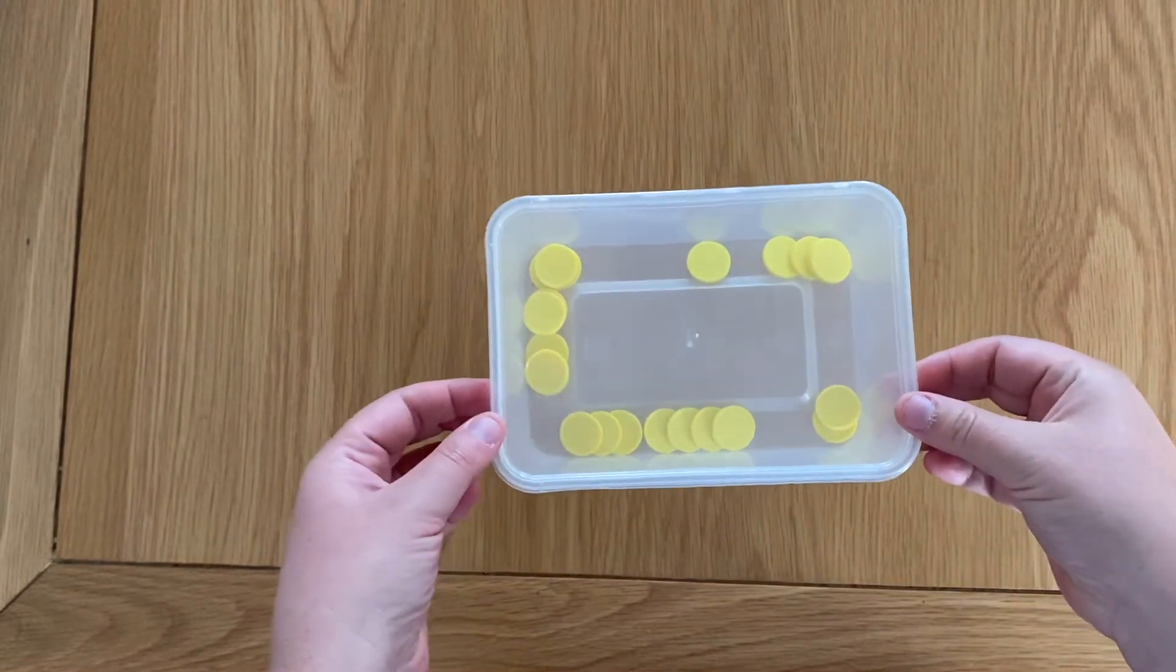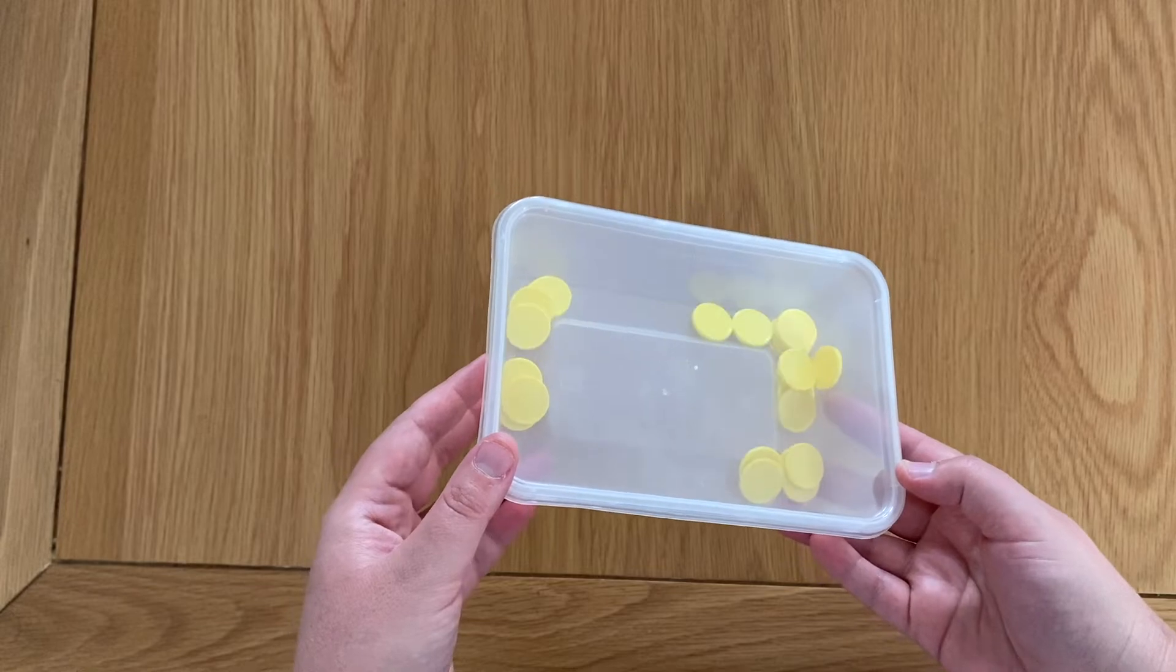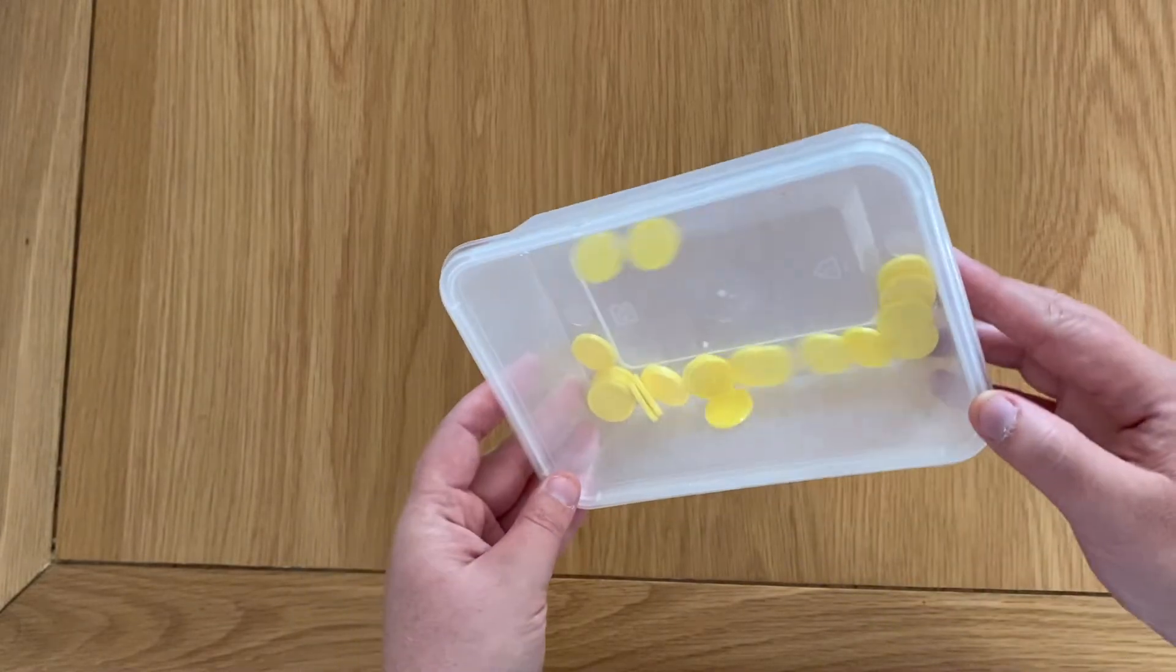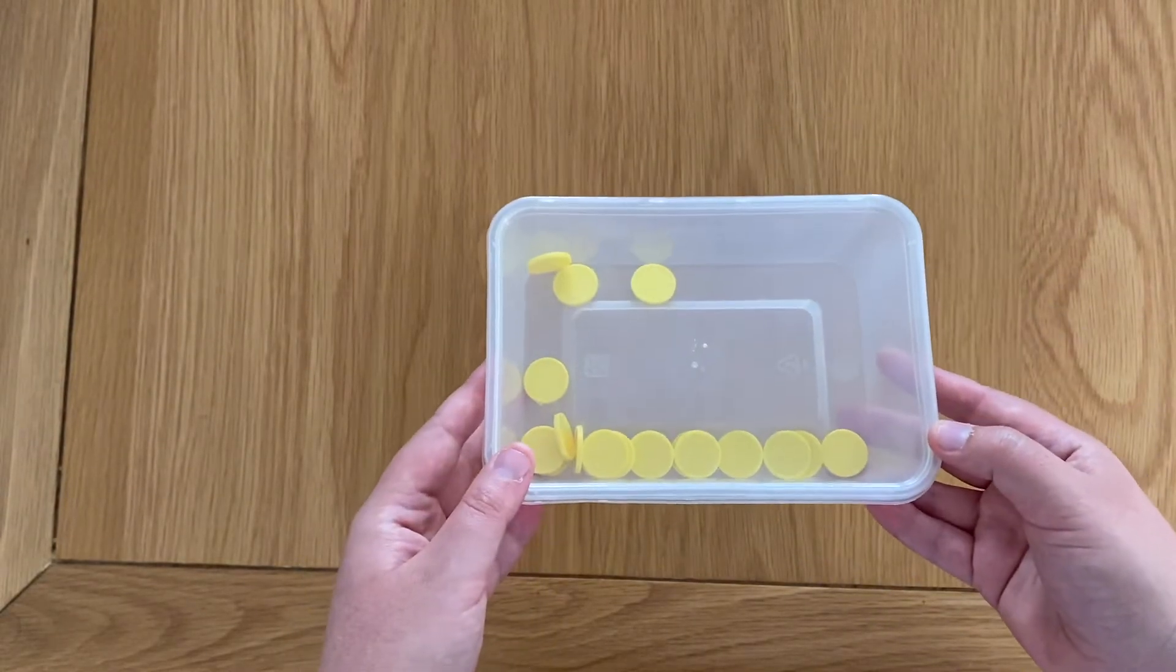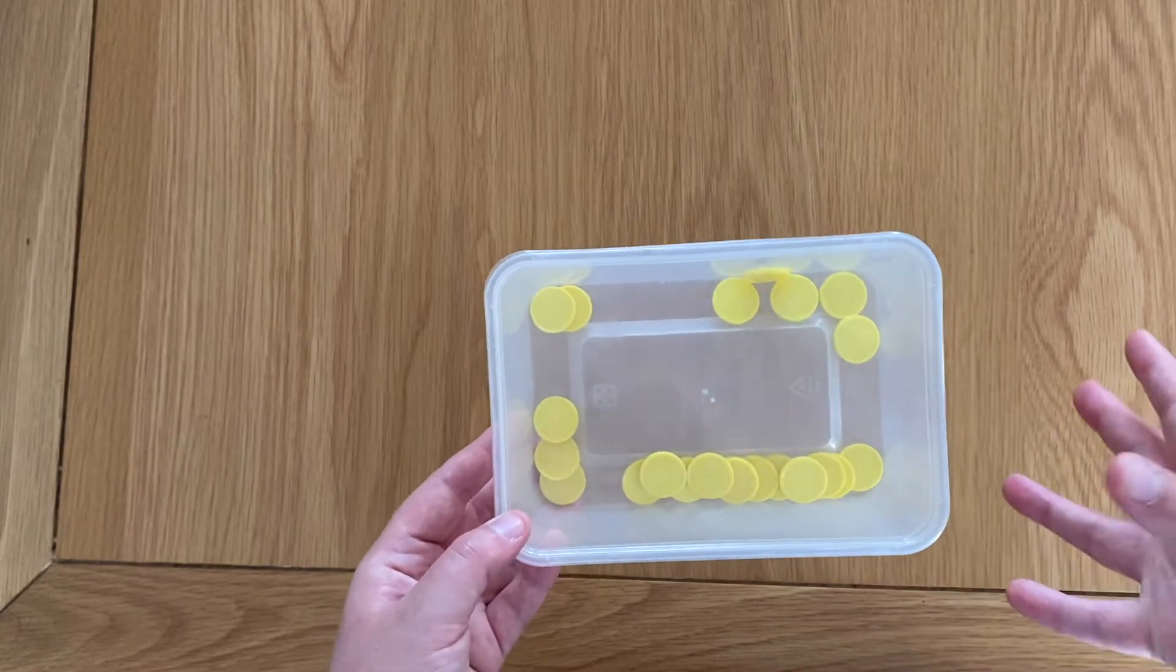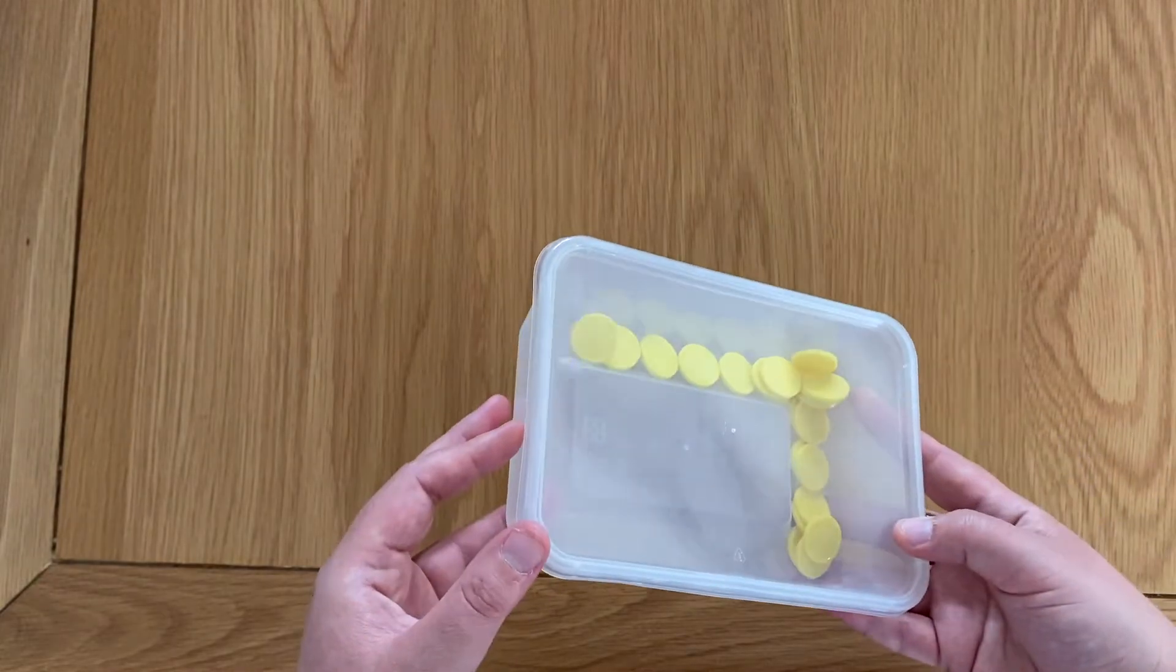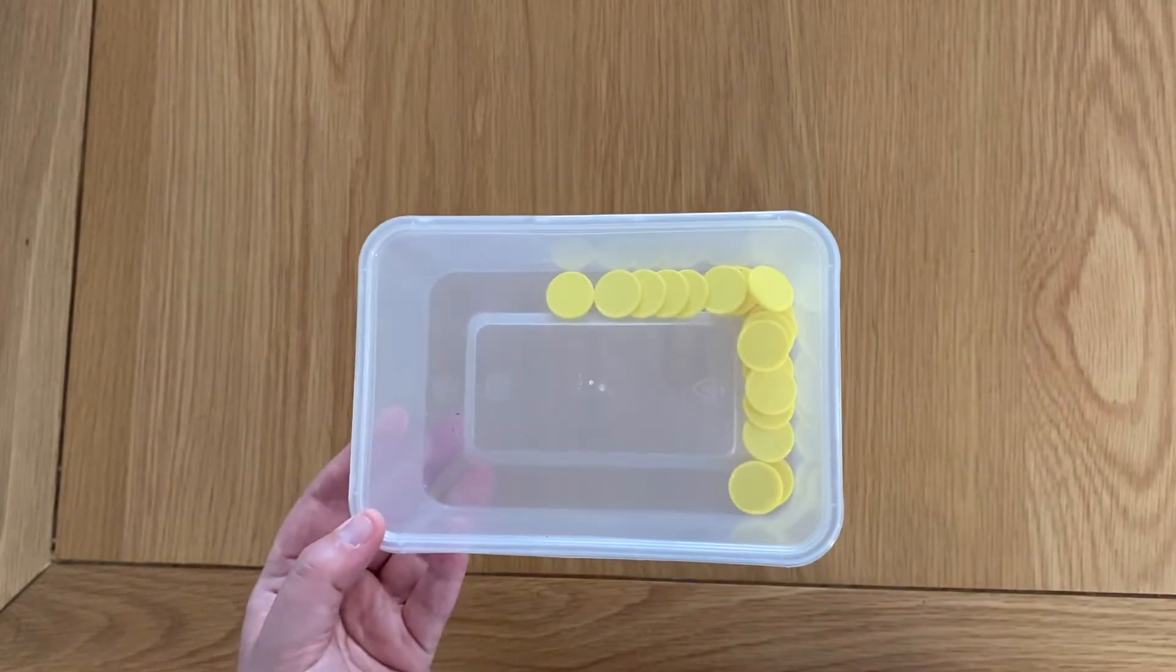Then I show each of the students the box and so what they're allowed to do is shuffle the counters around and have a look so that they can make mental groups in their head but what they're not allowed to do is count each counter one by one. So I put a time limit on the amount of time that they're allowed to look at the counters and then they pass it to the next person.